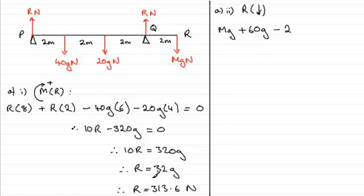But we found out in the previous part that R was 313.6 Newtons, or 32G. I'm going to just write in 32G. Two lots of 32G. And this is the resultant force now acting on the plank. But because it's in equilibrium that resultant force must equal zero.